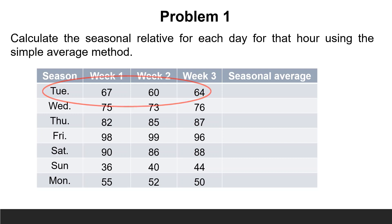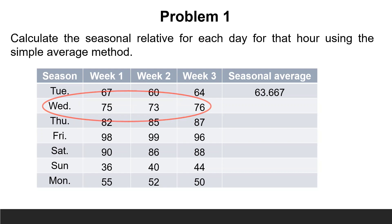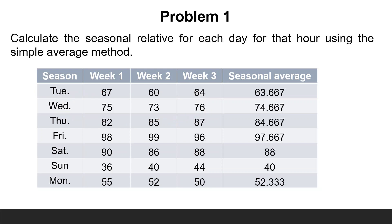The average of Tuesday is 67 plus 60 plus 64 divided by 3, equals 63.667. The average of Wednesday is 75 plus 73 plus 76 divided by 3, equals 74.667. And so on until the calculation of the average of Monday.